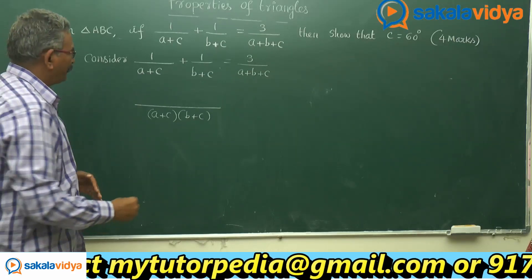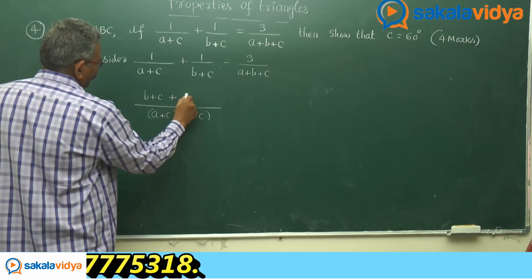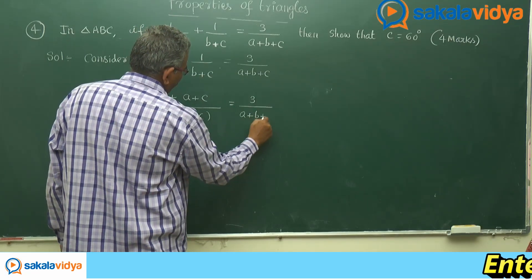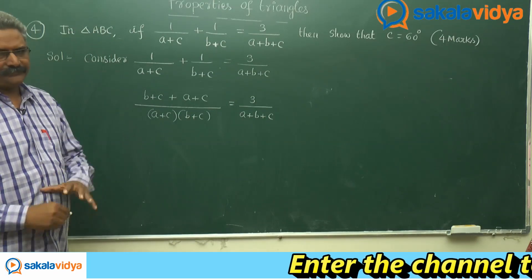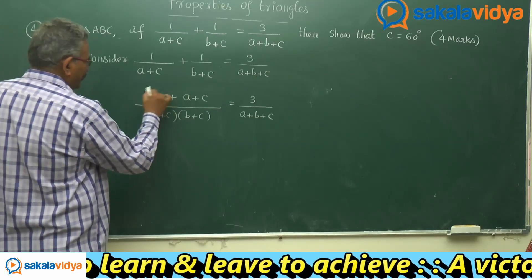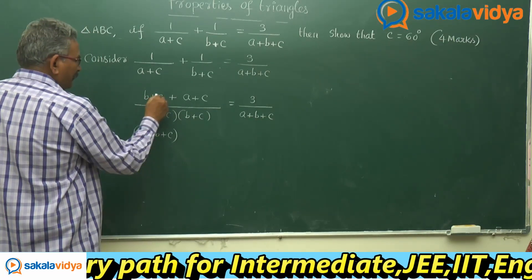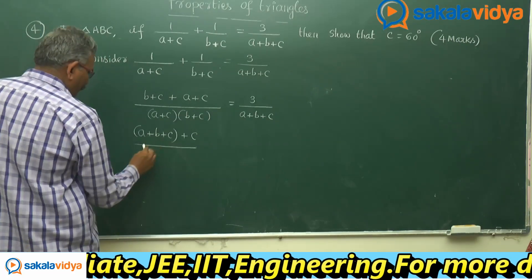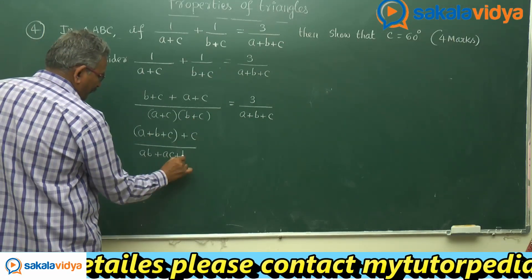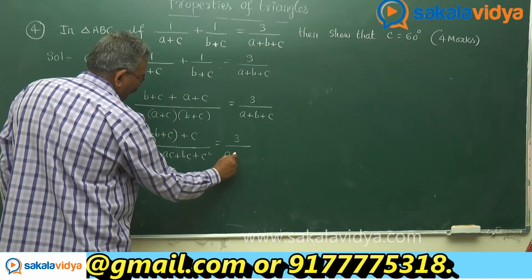A plus C gets cancelled, giving B plus C. And B plus C gets cancelled, giving A plus C. So we have B plus C plus A plus C equals to 3 times A plus B plus C. This can be written as A plus B plus 2C upon AB plus AC plus BC plus C square equals to 3 by A plus B plus C.